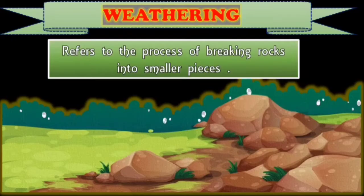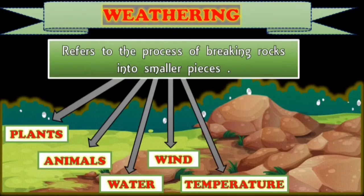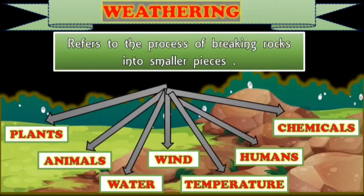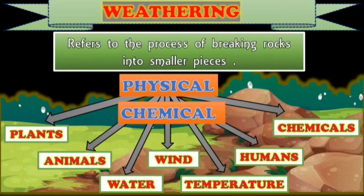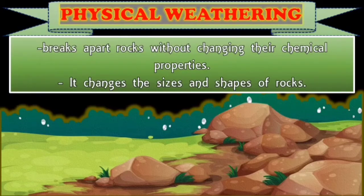These agents can be in the form of plants, animals, water, wind, temperature, humans, and chemicals. And weathering can be classified into physical or chemical weathering. Physical weathering, or what you call mechanical weathering, breaks apart rocks without changing their chemical properties. It changes the sizes and shapes of rocks. In other words, rocks are broken into smaller pieces without changing their chemical composition. So in this process, only the physical appearance of rocks is changed.